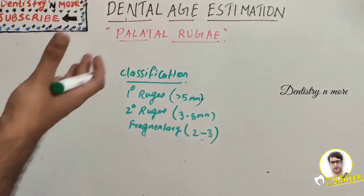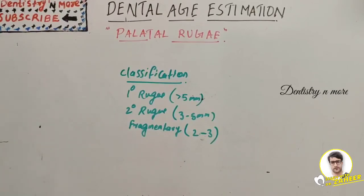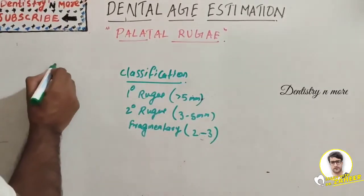Because palatal rugae are well protected by these structures, they can resist decomposition to an extent. They are very unique, just like our fingerprints, and seldom change shape as age progresses. They also reappear after trauma or surgical procedures. These are the key peculiarities of the palatal rugae pattern.